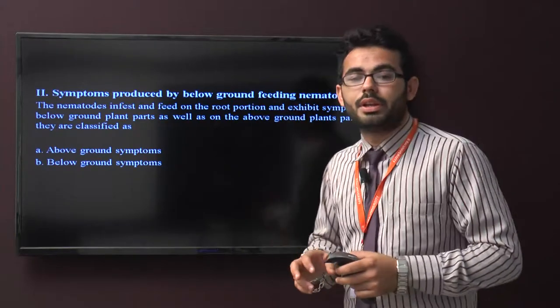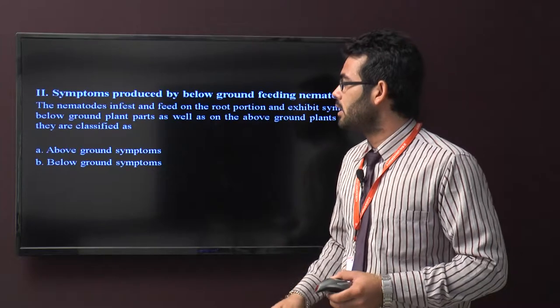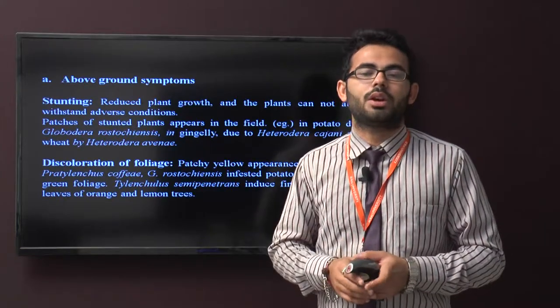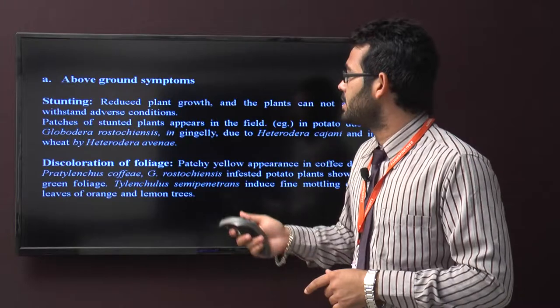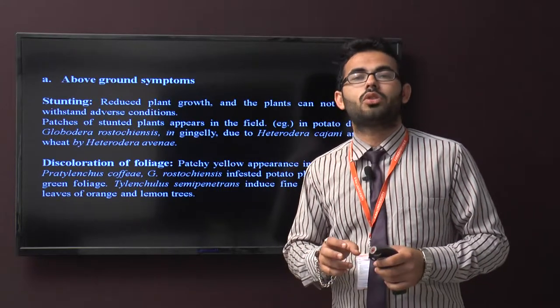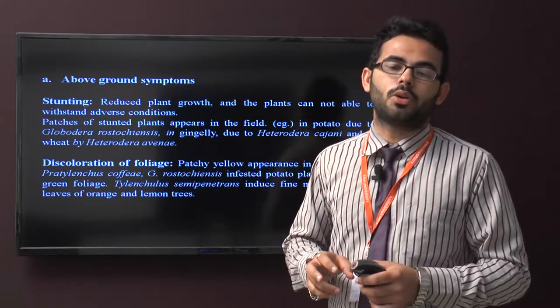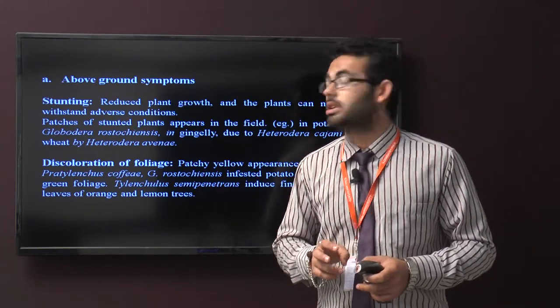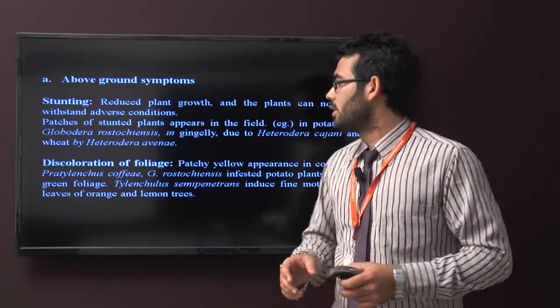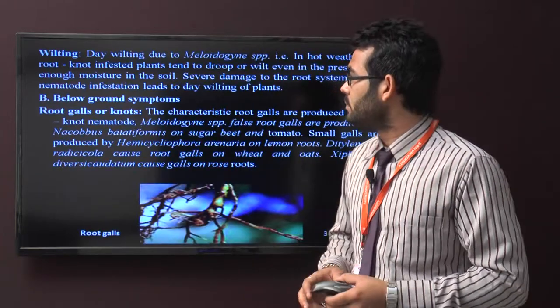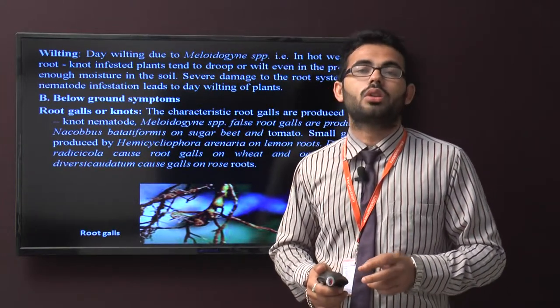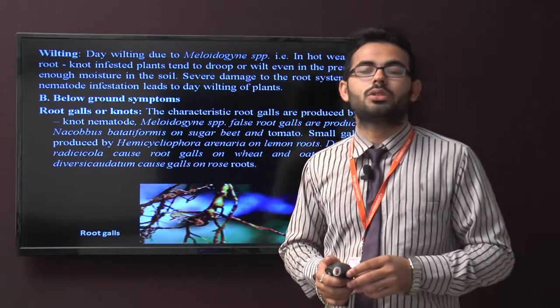Below-ground feeding produces above-ground symptoms. First is stunting, which reduces plant growth so plants cannot withstand adverse conditions. Patches of stunted plants appear in the field. Discoloration of foliage includes patchy yellow appearance in coffee due to Pratylenchus coffeae, Globodera rostochiensis in potato plants causing pale light green foliage, Tylenchulus semipenetrans in citrus causing mottling on leaves of orange and lemon trees. Wilting occurs during dry periods due to Meloidogyne species in hot weather. Root knot infected plants tend to droop and wilt even in presence of enough soil moisture.